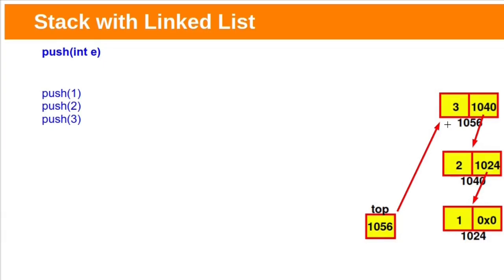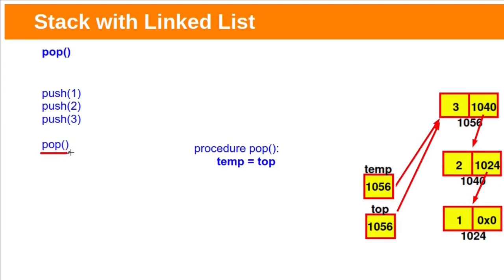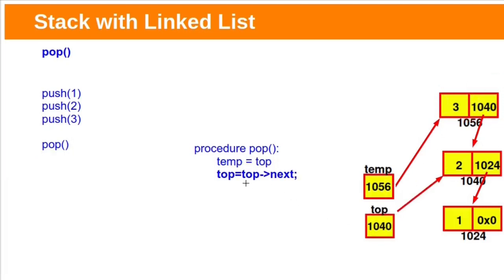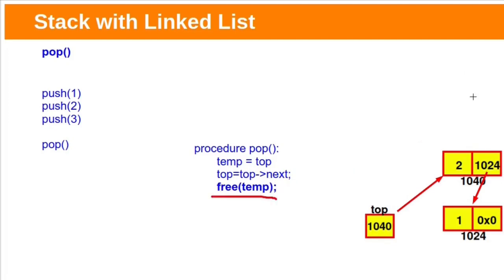Right now we have three items in the stack, and top points to the most recently added node. To perform a pop operation, we remove the top node. This can be done by advancing the top pointer, but since memory was dynamically allocated, we need to free it to avoid memory leaks. Before advancing top, store its contents in a temporary pointer. Now temp points to the most recently added item. Then advance top by storing top's next into top. Finally, delete the node using the temp pointer with the free function.